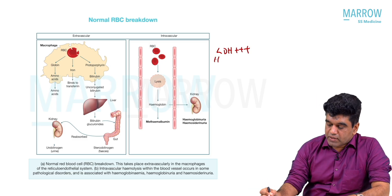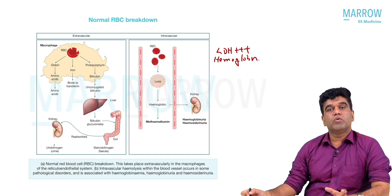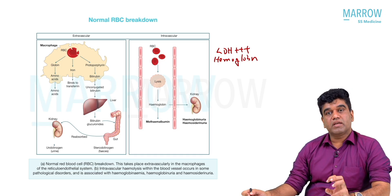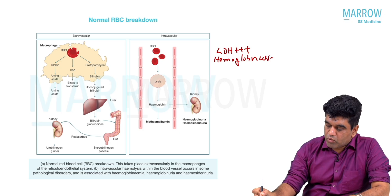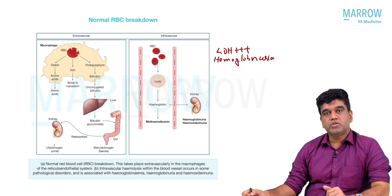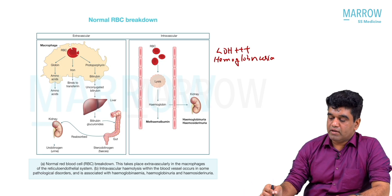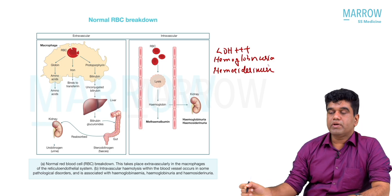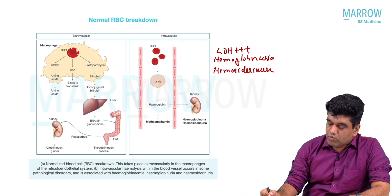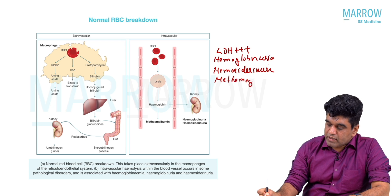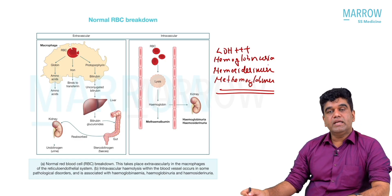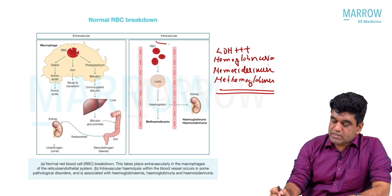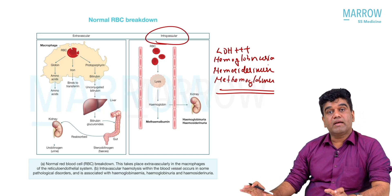When RBCs are destroyed, hemoglobin is released into the blood, comes into the glomerulus, gets filtered, and the patient will have hemoglobinuria. Part of the hemoglobin will be reabsorbed into the PCT and when that cell sheds it results in hemosiderinuria. So hemoglobinemia, hemoglobinuria, hemosiderinuria, and this hemoglobin may be converted into methemoglobin — giving methemoglobinemia. These can all be seen with intravascular hemolysis.